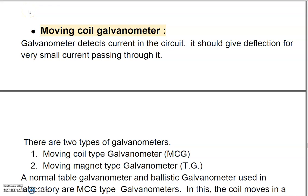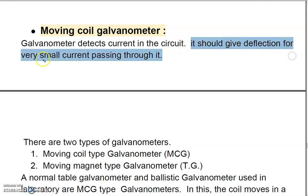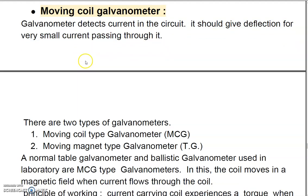Welcome everyone. Today we will see a very important topic in current electricity, or even the magnetic effect of electric current. When you speak about measurement of current, we talk about an instrument called a galvanometer. Today we will see how a moving coil galvanometer functions. A galvanometer is a device which detects current in a circuit, and it should give deflection for very small values of current passing through it.